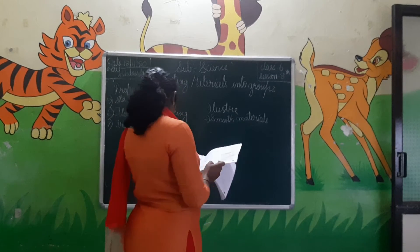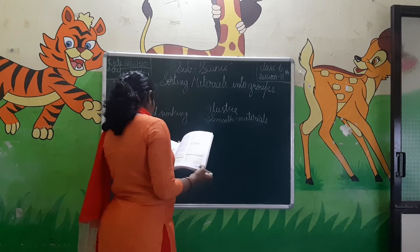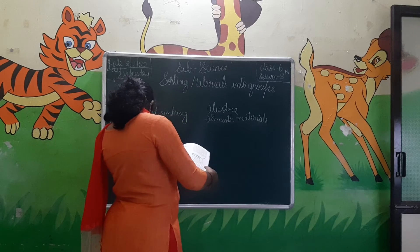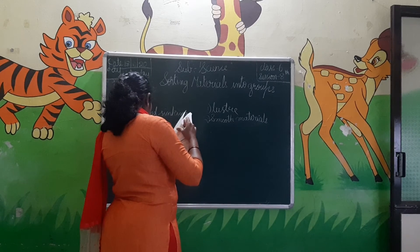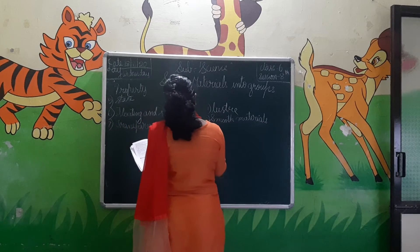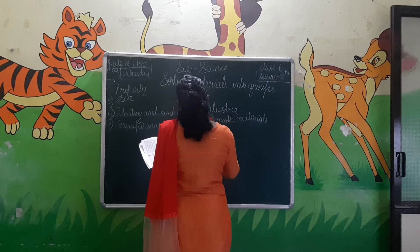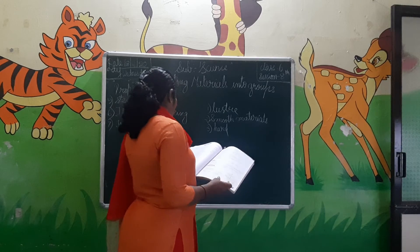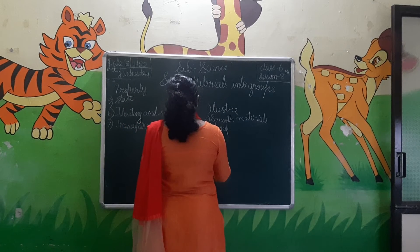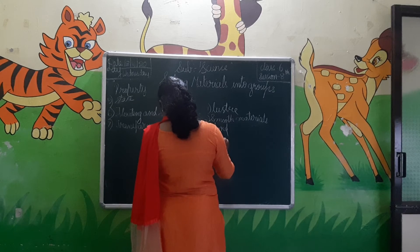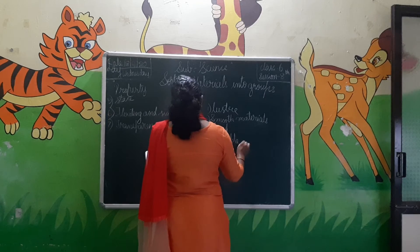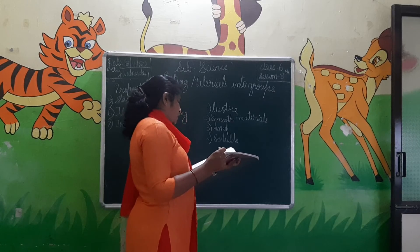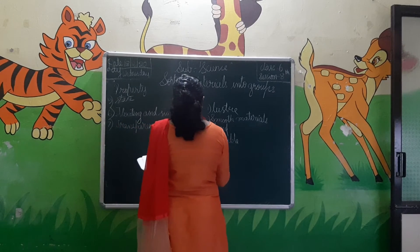Iron is a hard metal. Iron is a hard material. Vinegar is soluble in water. The stone is heavier than water, so it will sink in water.